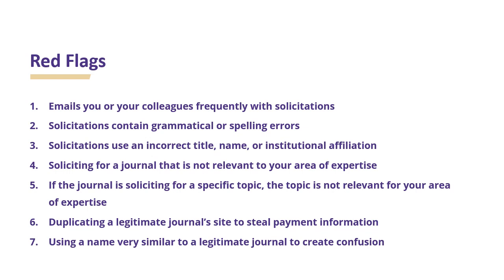These are some common red flags that you will see with predatory journals. One, they email you or your colleagues frequently with solicitations. Two, the solicitations contain grammatical or spelling errors. Three, solicitations use an incorrect title, name, or institutional affiliation when addressing you. Four, they solicit for a journal that is not relevant to your area of expertise. Five, if the journal is soliciting for a specific topic, the topic is not relevant to your area of expertise. Six, they duplicate a legitimate journal site to steal payment information. Seven, they use a name very similar to a legitimate journal to create confusion.